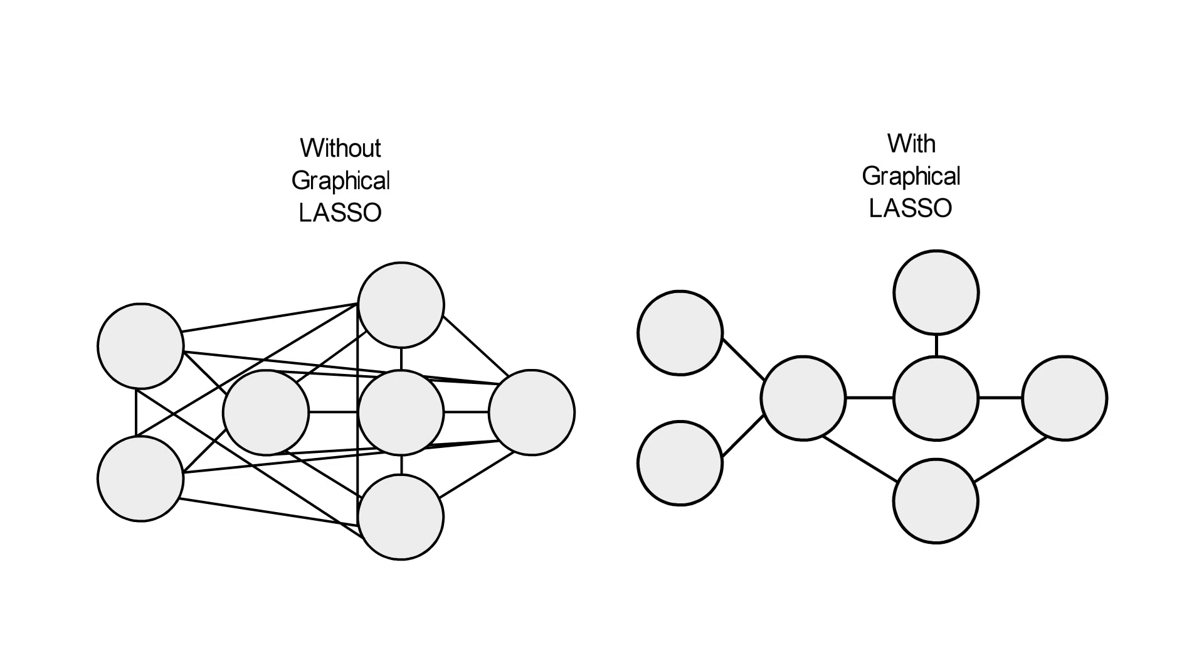Algorithms like graphical lasso enforce zeros in the information matrix, leading to sparse graphical models.